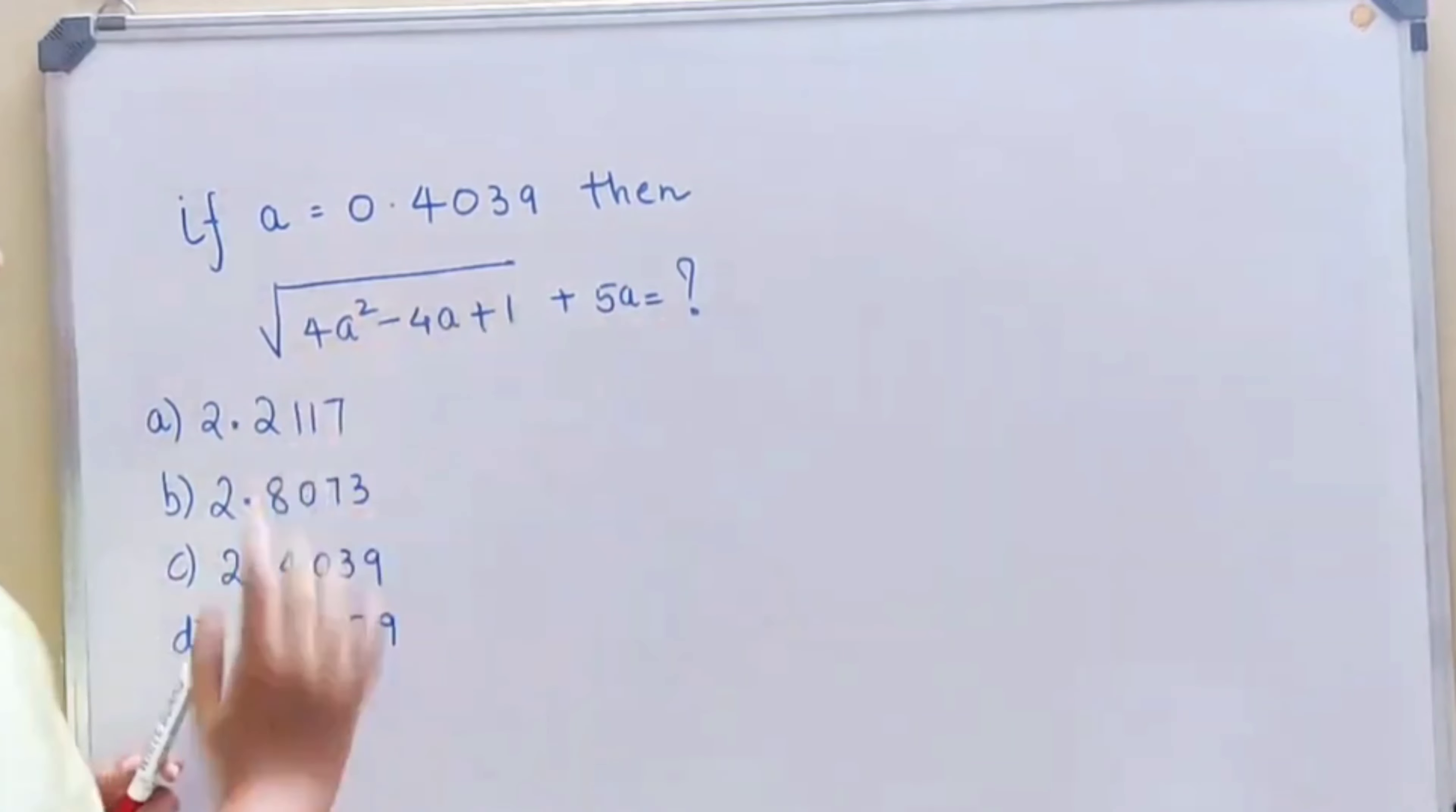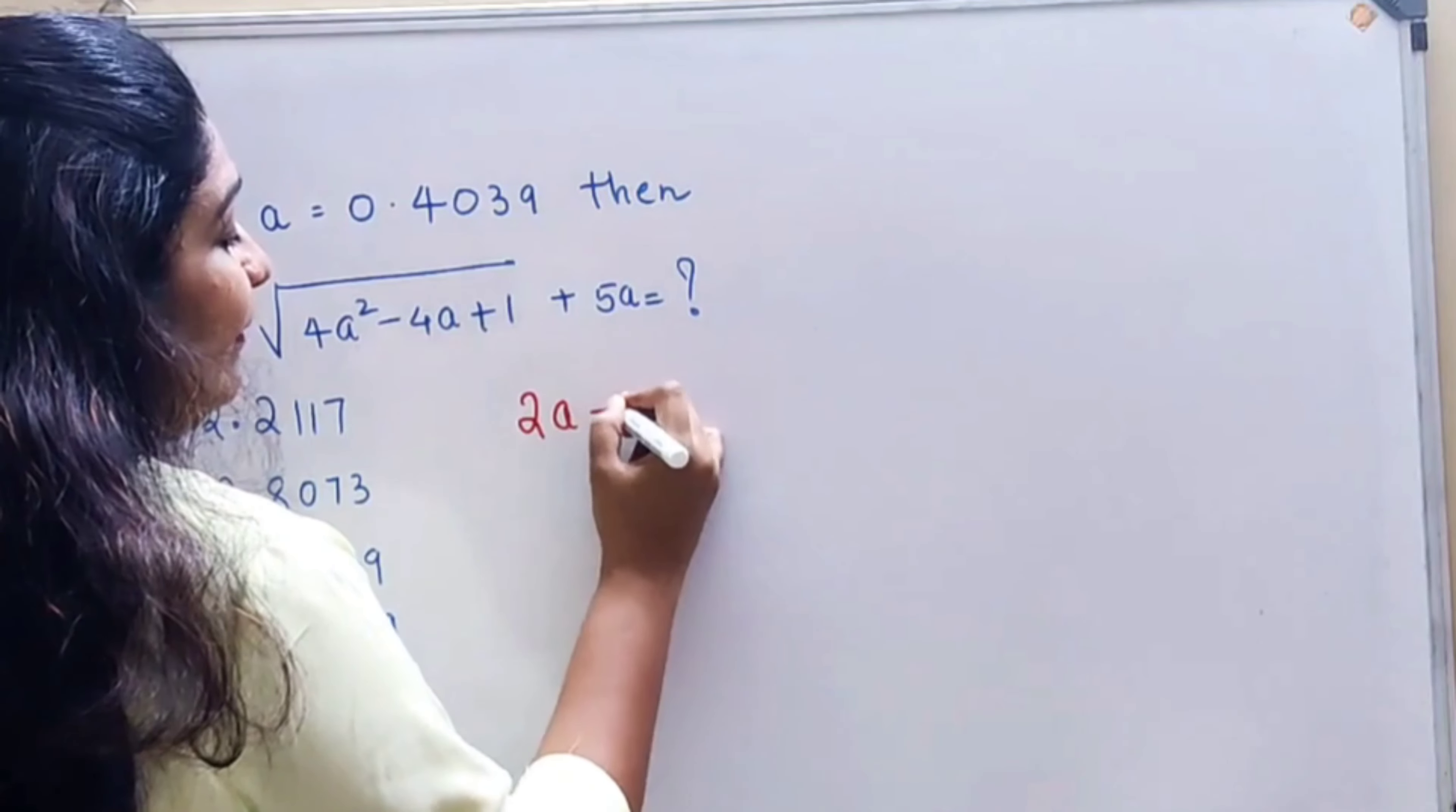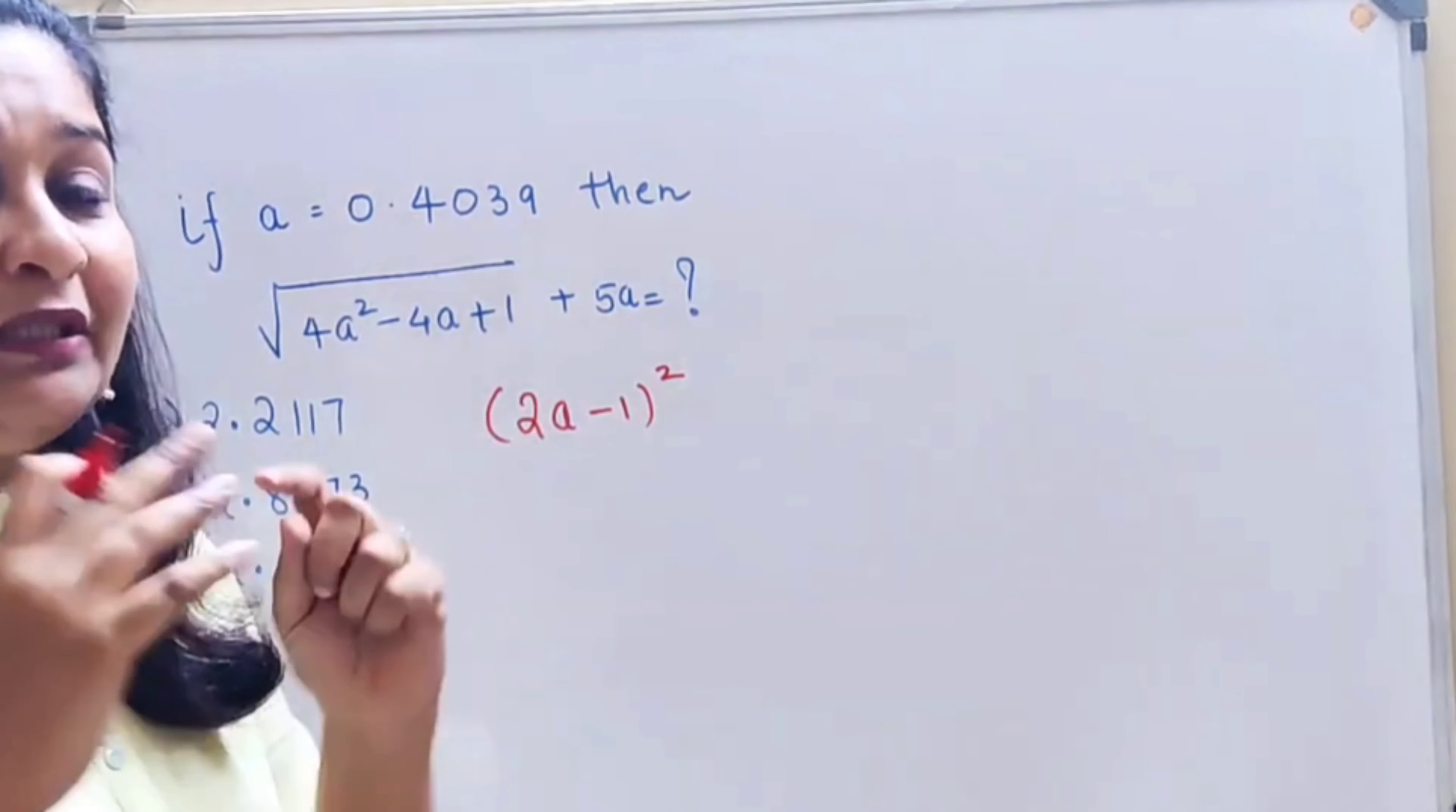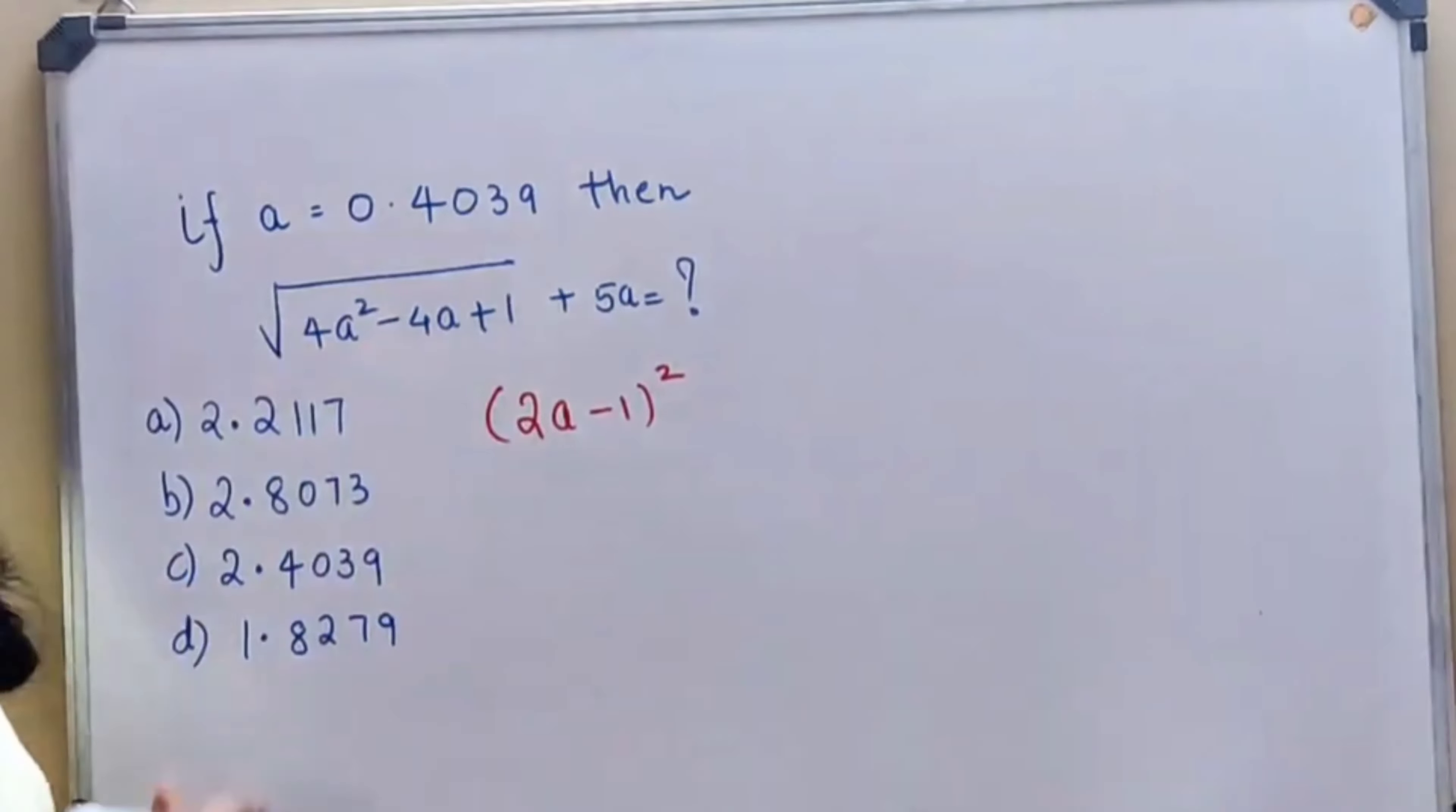Now if you look closely, this is actually the expansion of (2a - 1)². The problem is that when you actually solve this entire question, you will come across a point where your answer will not match any of these answers given over here.